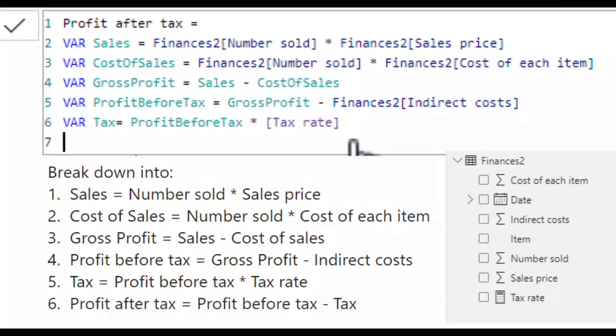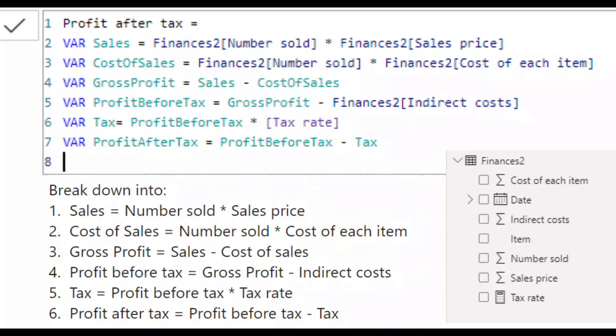In a new row, my last variable is my profit after tax. And I say that that equals my profit before tax minus my tax from line six. Once I have set up the variables, I need to display the resulting value. And to do this, I add return. So in a new line, return. And then I say what I would like to be returned, which is the variable profit after tax.